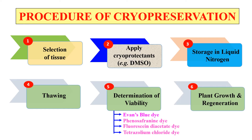Similarly, tetrazolium chloride (TTC) dye also stains living cells, and in living cells there is the formation of a red formazan, so we can identify viable cells. After checking the viability of these cryopreserved cells or tissues, we proceed to the next step: plant growth and regeneration. We take only the viable cells and proceed for plant tissue culture, and ultimately proceed for complete plant growth and regeneration. By these steps, we generally perform cryopreservation and reuse the tissue after cryopreservation.